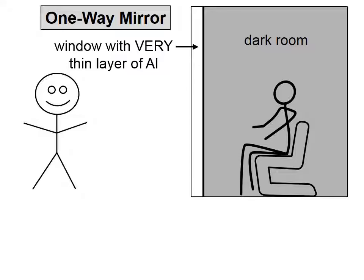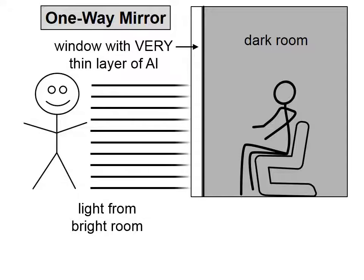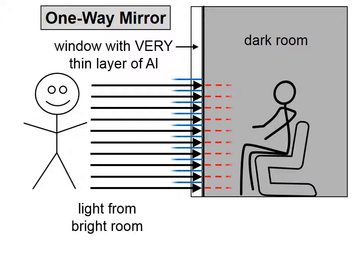In between the two, we have a window that has a very thin layer of aluminum. Now, that layer is so thin that light that is reflected off of the person who is being watched hits that very thin layer of aluminum.